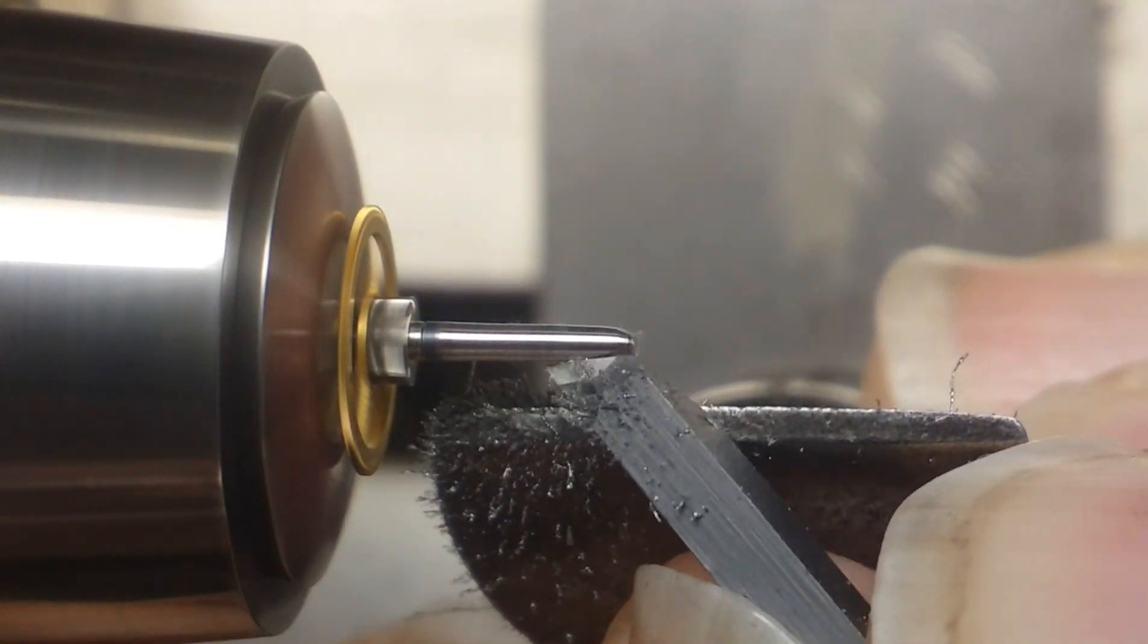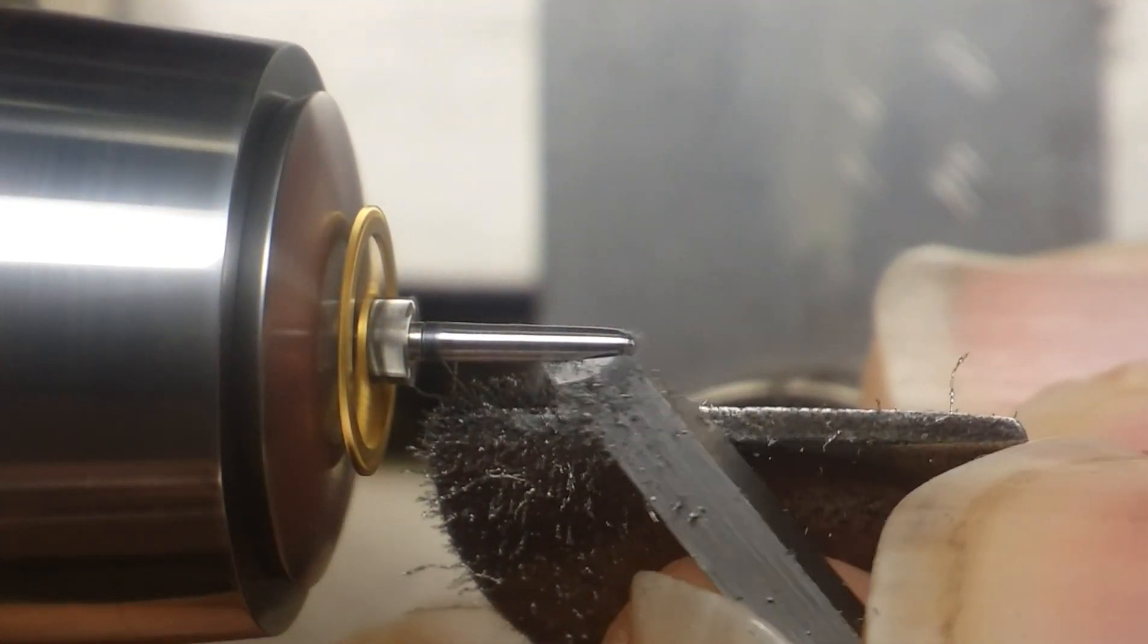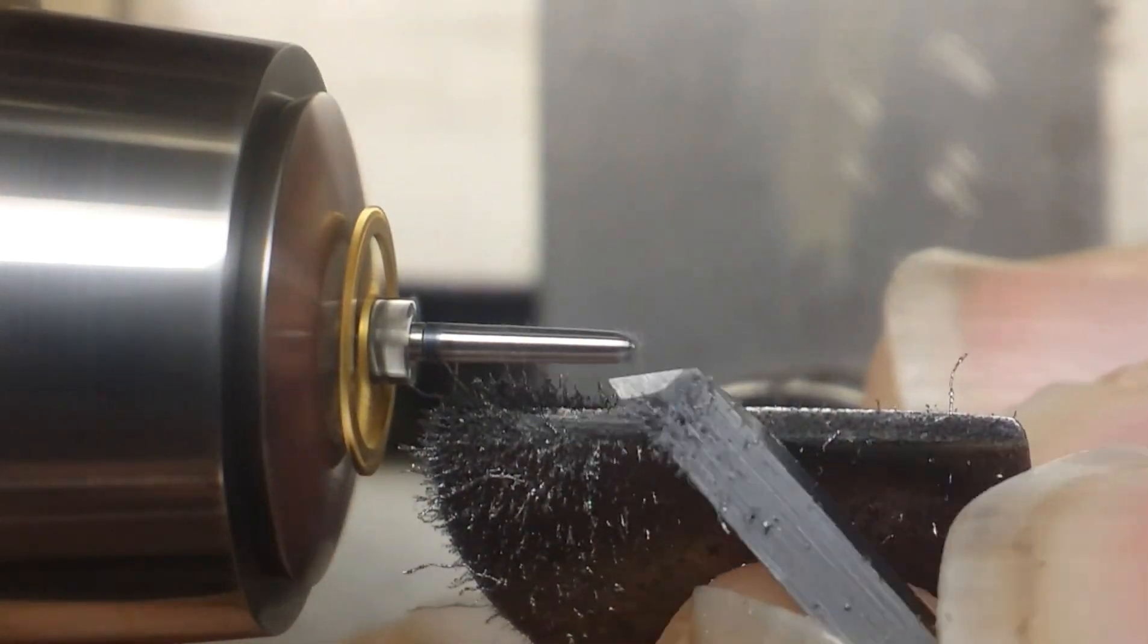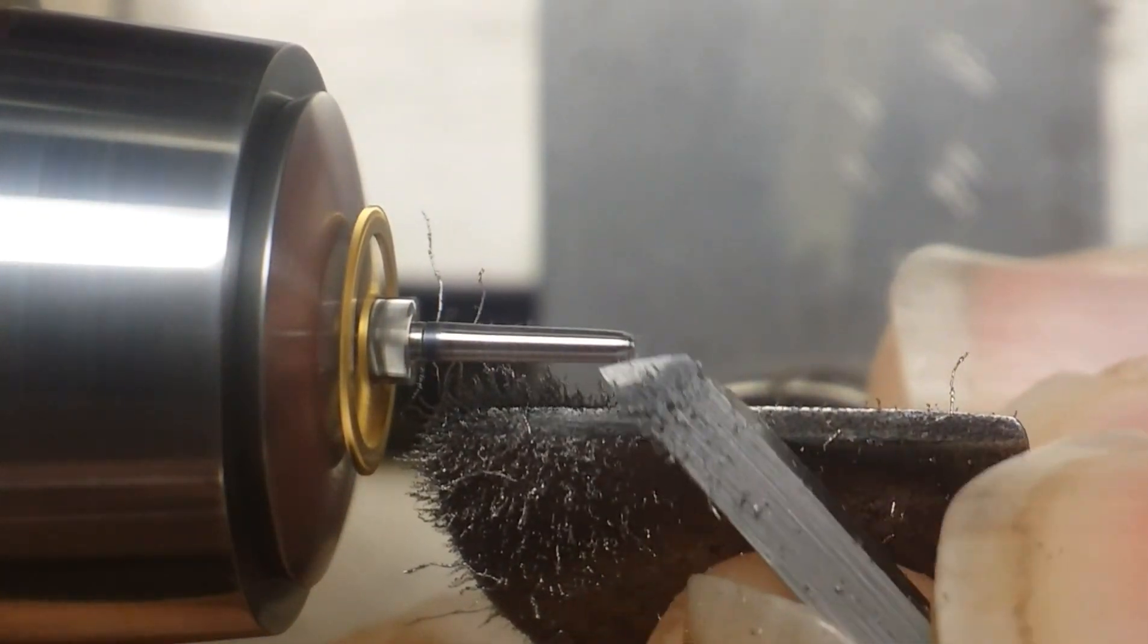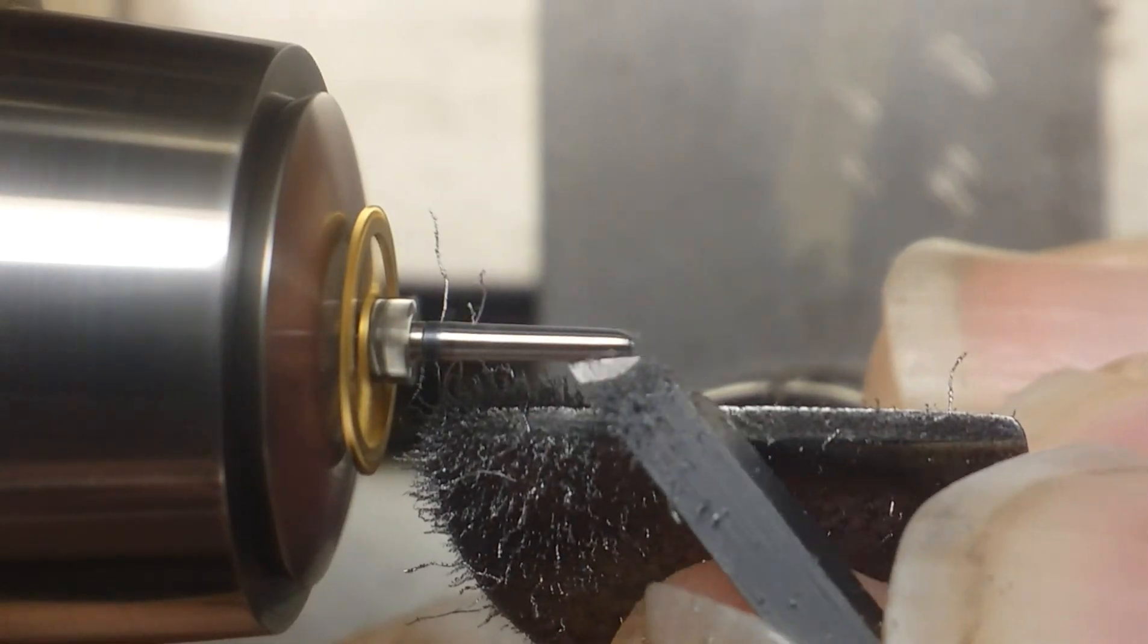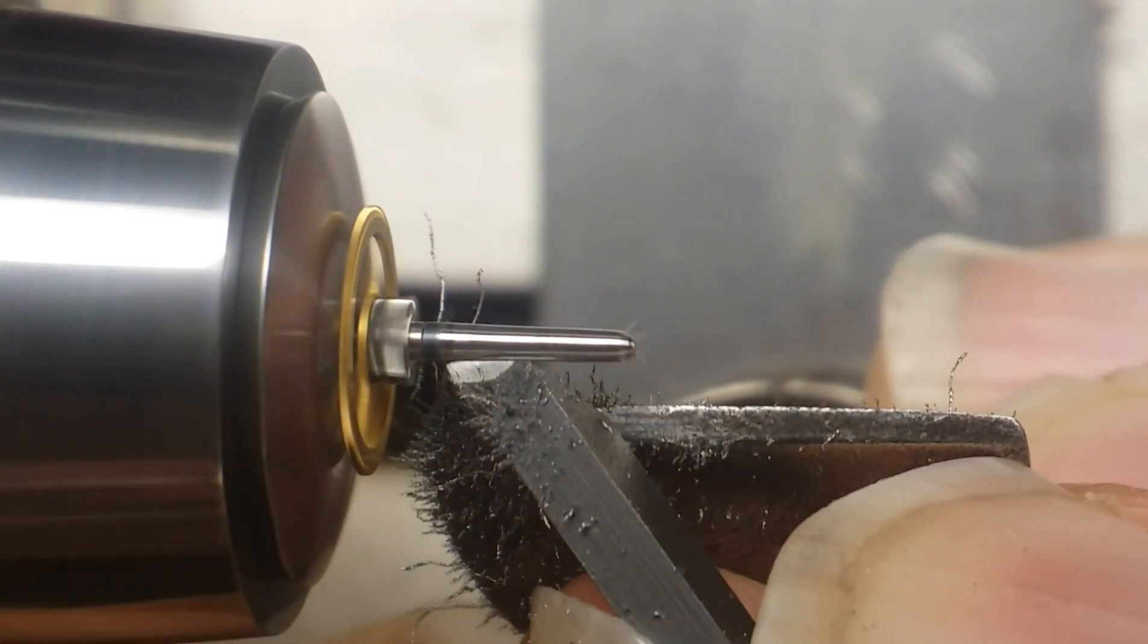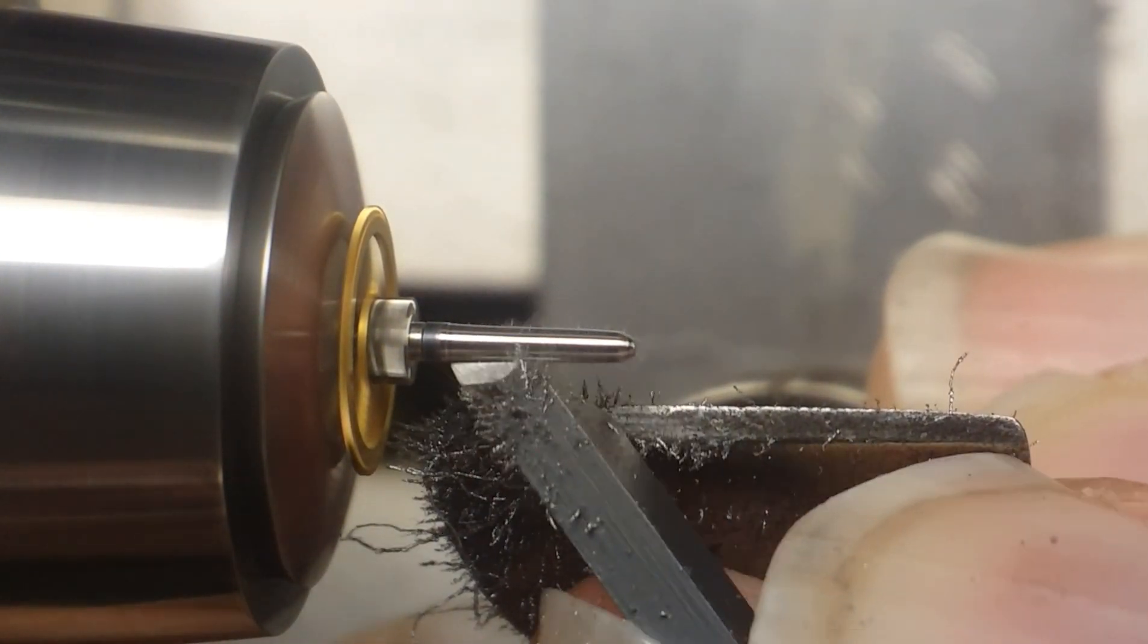And because of this, you have to take very light cuts or you risk breaking your graver, chipping the carbide graver, or worse yet, breaking the arbor altogether.